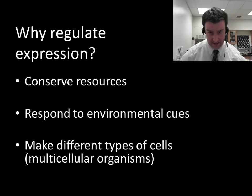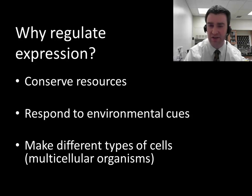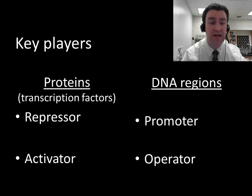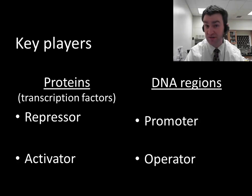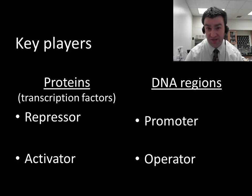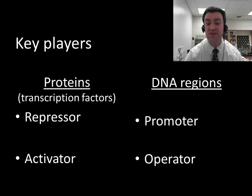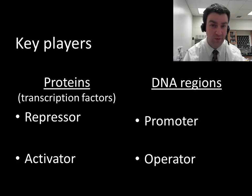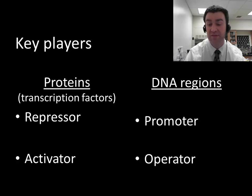All of the cells in our body do clearly different jobs, so let's talk about the basic mechanics of regulating expression. For prokaryotes, the key players are these: we're going to talk about proteins, specifically transcription factor proteins. There are two basic types of transcription factors — repressor transcription factors and activator transcription factors. Those proteins often interact with different DNA regions, and we're going to talk about two broad DNA regions in prokaryotes: the promoter region, which is also where the RNA polymerase protein wants to bind, and something called the operator region.